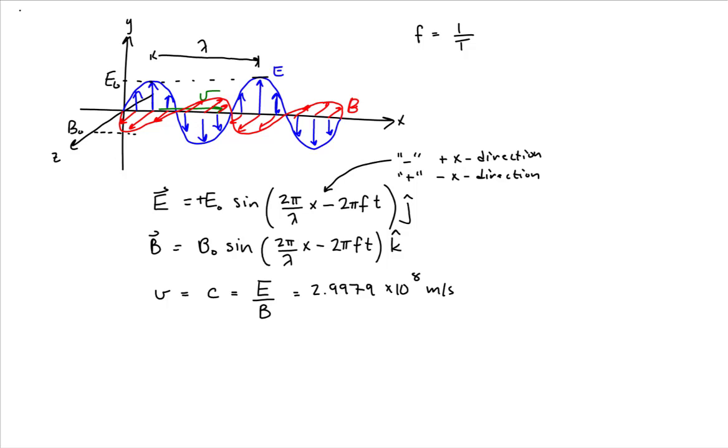Now one more thing to note, that all traveling waves, the velocity is equal to the product of the wavelength and the frequency. So since this wave is moving at the speed of light, we have a handy relationship between the wavelength, the frequency, and the speed of the wave. So let's now work on solving the problem that we were given.